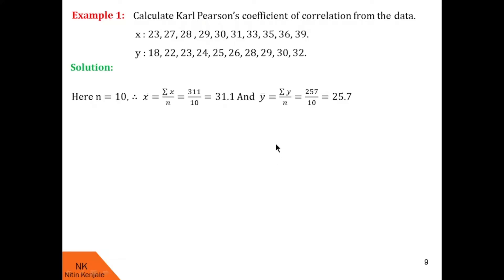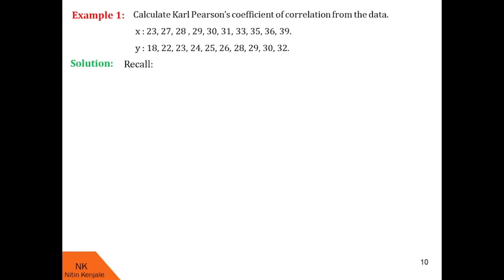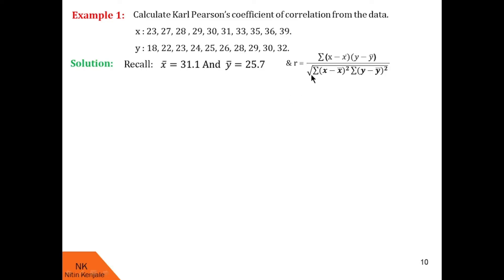For further calculations we are going to use a calculation table. Recall that x bar is 31.1 and y bar is 25.7. The formula for the coefficient of correlation is r equals summation of x minus x bar into y minus y bar, divided by the square root of summation of x minus x bar square into summation of y minus y bar square. We need to calculate each of these three summations.